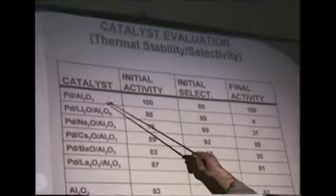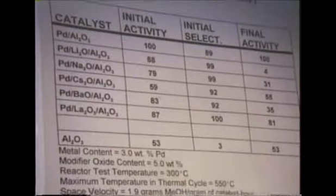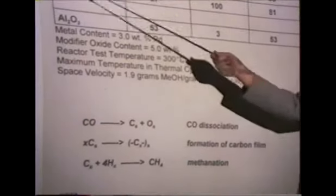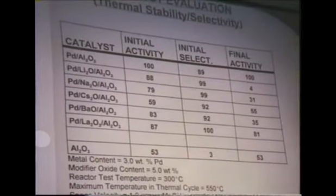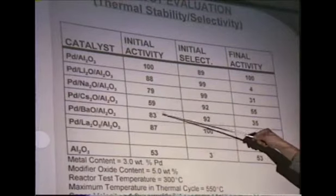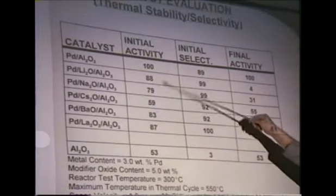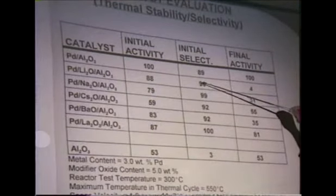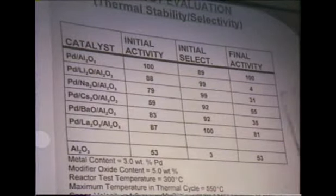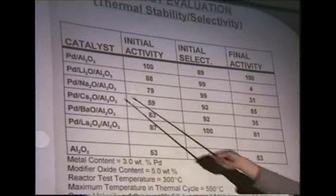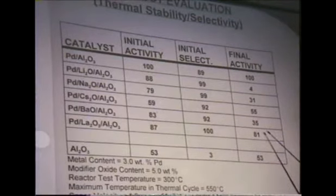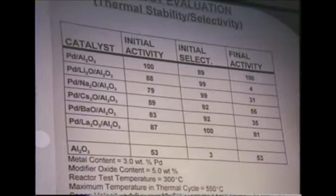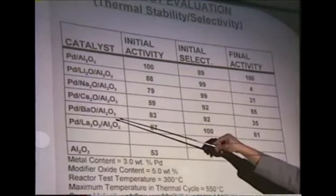We looked at palladium catalysts with a higher metal loading—3 weight percent versus the previous 0.5 weight percent—to characterize these catalysts more easily and to follow deactivation more closely. We saw a similar effect of adding the modifier on the alumina in terms of initial activity and very good selectivities with the modifier in place. Final activities were interesting: with lithium we lost almost all activity, but going down the periodic table to cesium, there's almost no loss in activity. Lanthanum is similar—after a thermal cycle we saw very little loss in activity. This indicates that these modifiers are also affecting the metal itself, not only neutralizing the support but interacting very strongly with the metal.